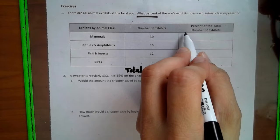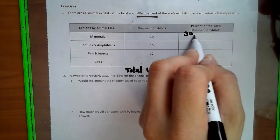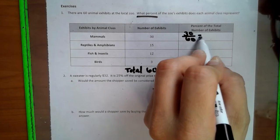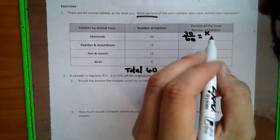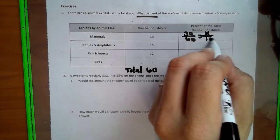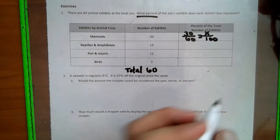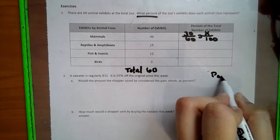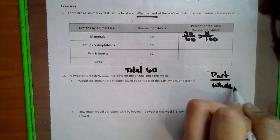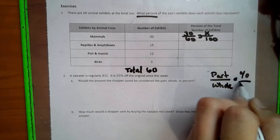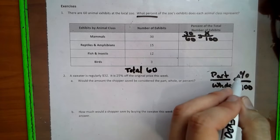So we have the part over the whole equals what percent over 100. So we have a little side note I'll put over here. It goes part over whole, percent over 100. And then the percent part,